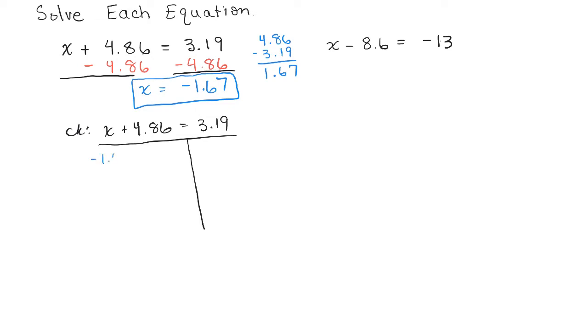So negative 1.67 plus 4.86. Now, of course, you could do this in your calculator as well if you're allowed to use a calculator. All right, so negative 1.67 plus 4.86. Now, this is going to be positive because 4.86 is bigger than negative 1.67. Again, I'm adding a negative and a positive number, so the positives won out here. And so I'm going to just do my arithmetic over here, subtracting. And I do get 3.19 if I subtract.